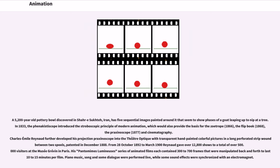In 1833, the Phenakistoscope introduced the stroboscopic principle of modern animation, which would also provide the basis for the Zoetrope (1866), the Flipbook (1868), the Praxinoscope (1877), and cinematography. Charles Emile Raynaud further developed his projection praxinoscope into the theatre optique with transparent hand-painted colorful pictures in a long perforated strip wound between two spools, patented in December 1888.